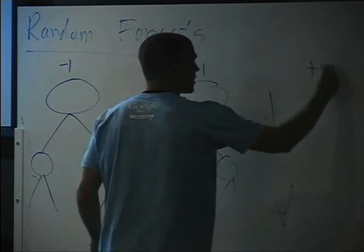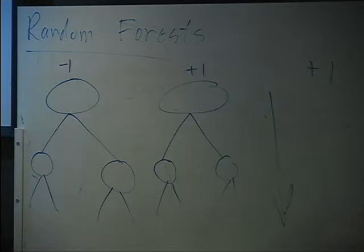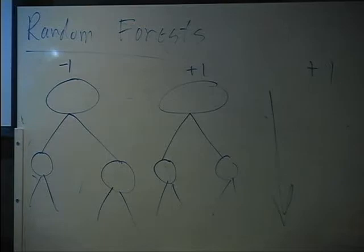Decision trees alone aren't that powerful a classifier, but using decision trees in a method like random forests can be very useful. These are Leo Breiman's invention — a very readable 2001 machine learning paper where he describes the algorithm and talks about why it works. It works because the trees are still unbiased but you decrease the variance by doing this randomization.